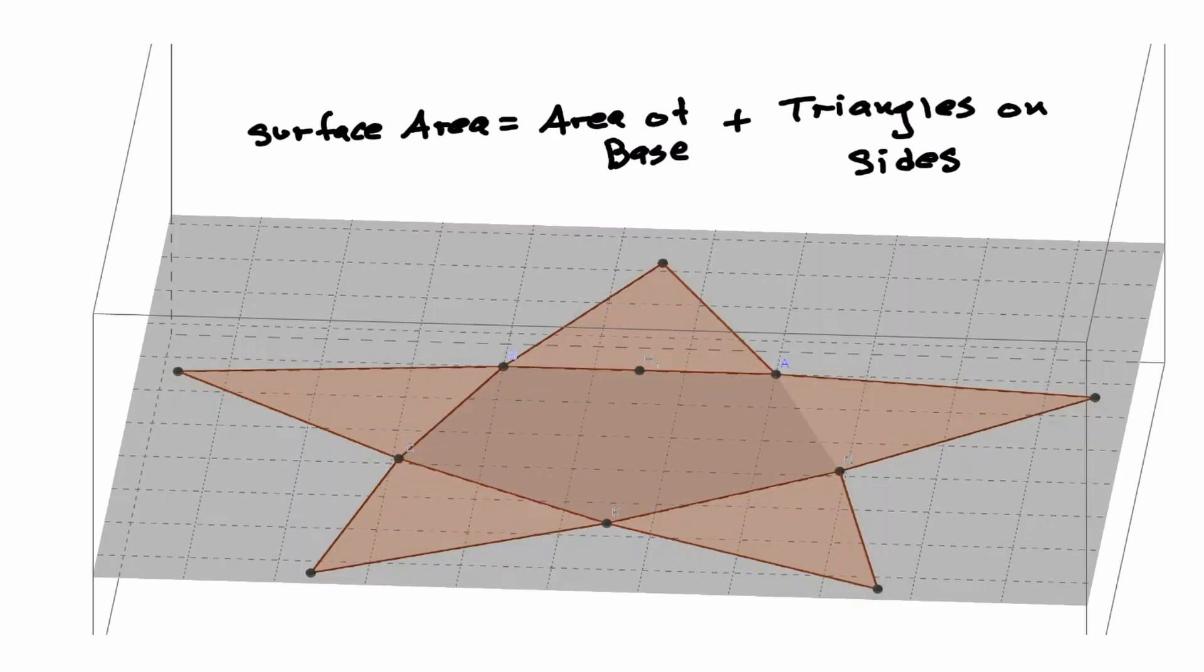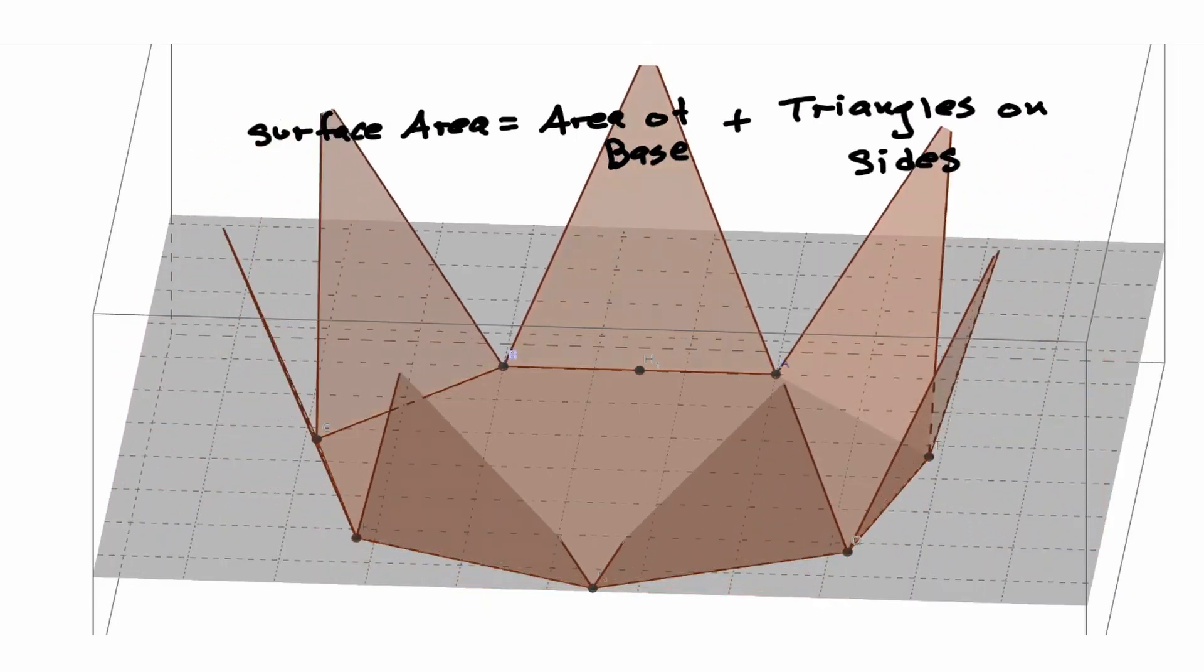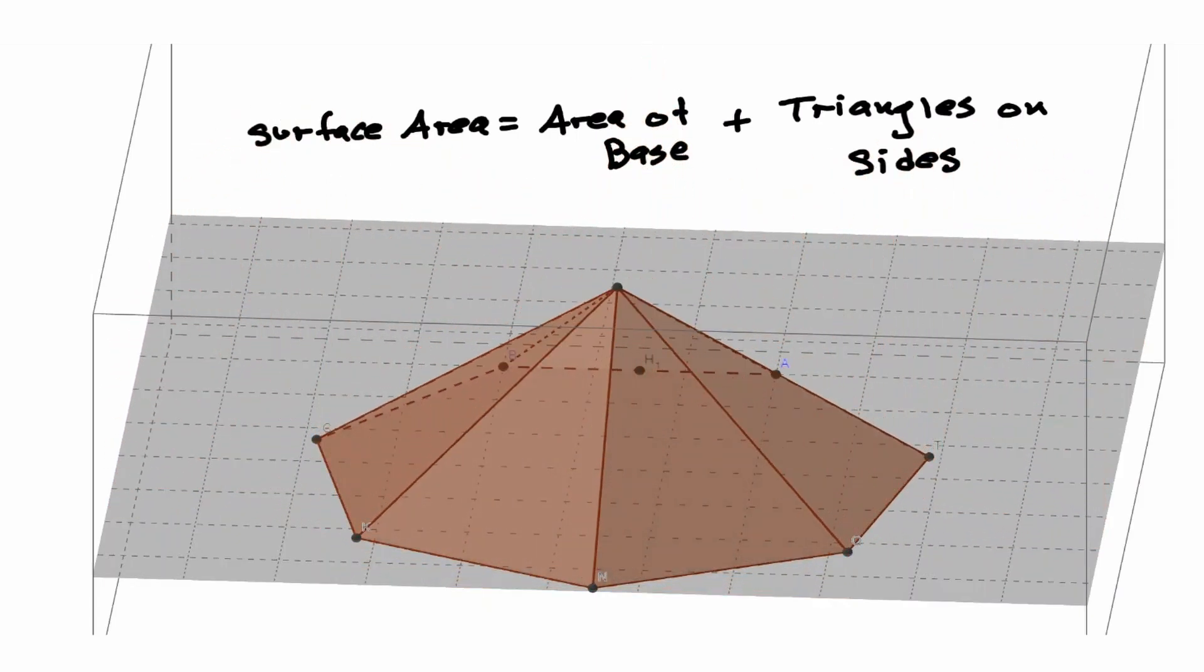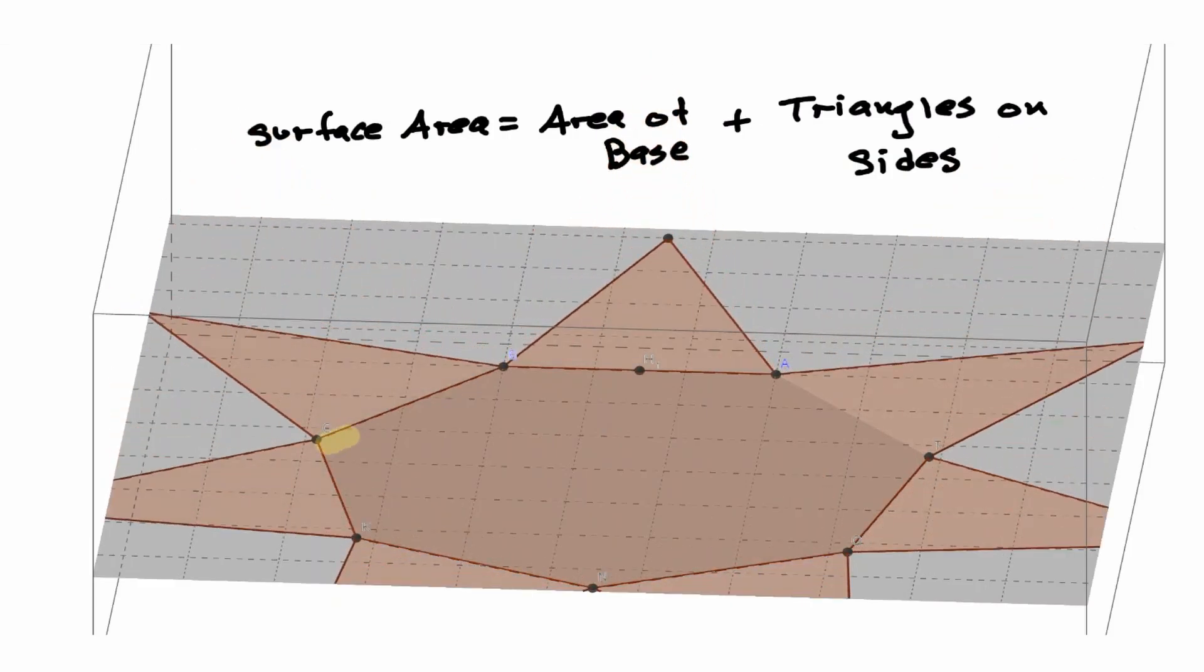If we increase the number of sides in our base, that also increases the number of triangles to complete the pyramid. So in this case, the base has 7 sides. Well, that's as many triangles as we need to add.